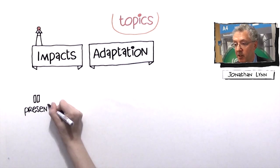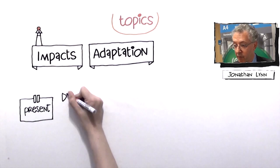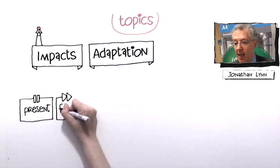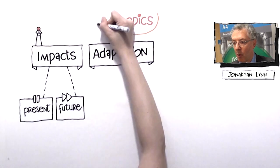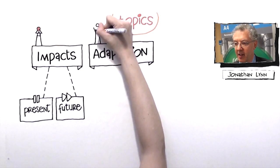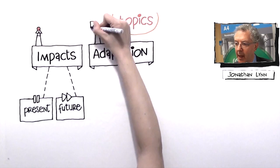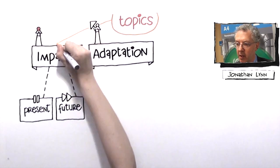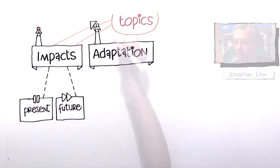It looks at the impacts that have already happened and the future possible impacts, and it also looks at this from the opportunities for adjusting. It's not just a bad news story, it looks at it from a risk management perspective. How can we deal with this problem?